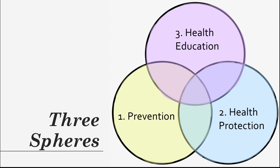The first sphere is prevention. Prevention aims to decrease risk factors and minimize the consequences of a disease. This includes primary, secondary, and tertiary prevention methods. Common examples of prevention would be legislation such as seatbelt legislation, immunization, screenings, developmental surveillance, and alternatives to smoking such as chewing gum.